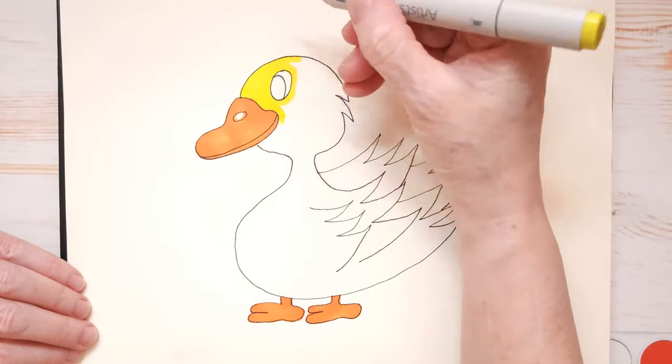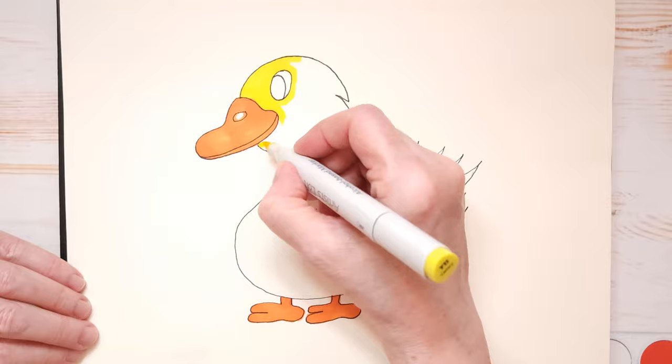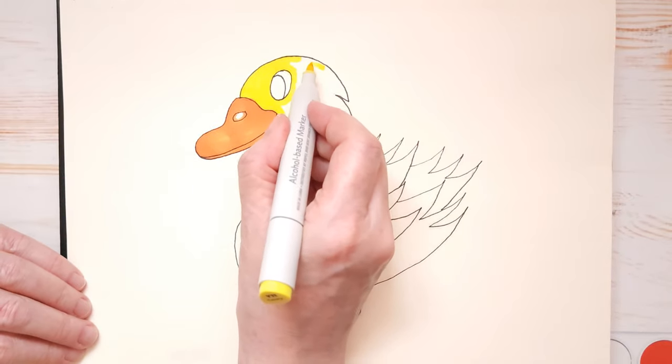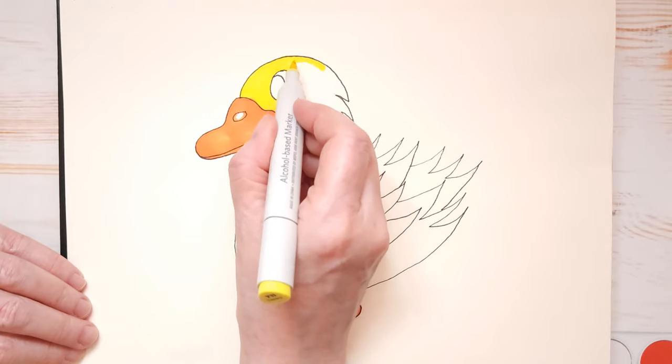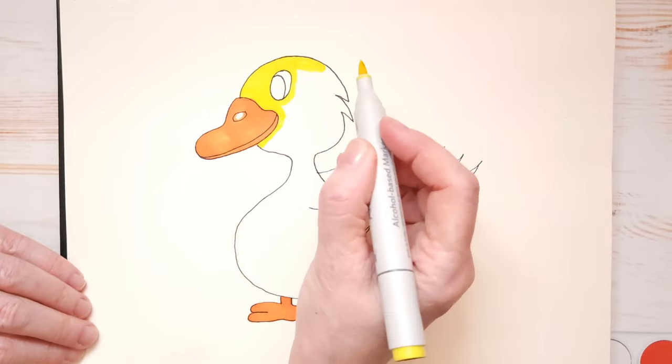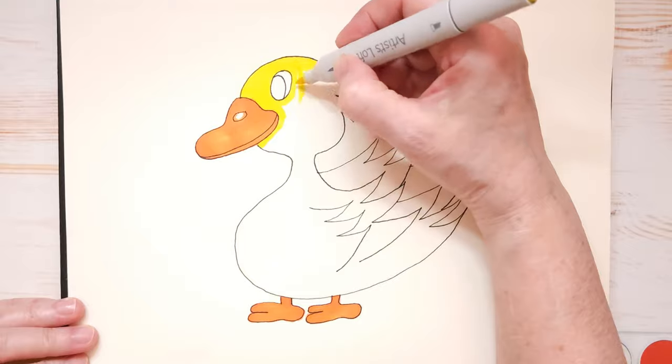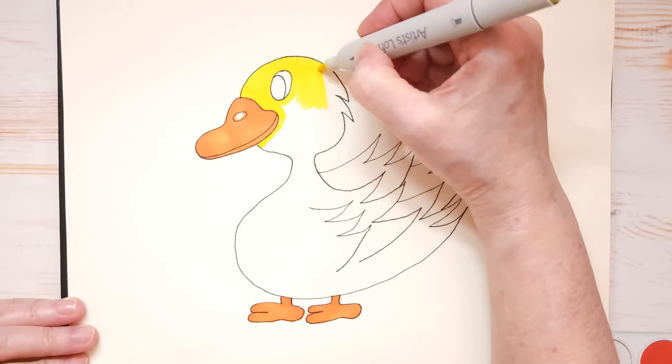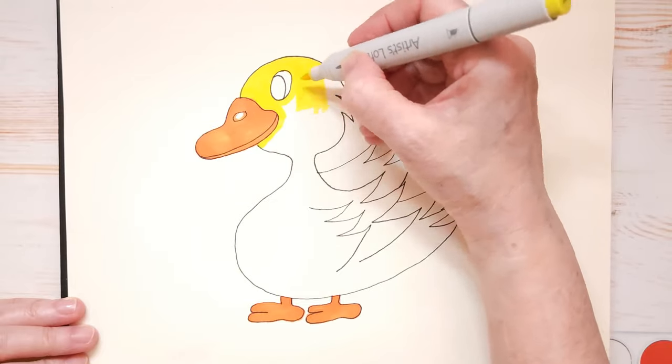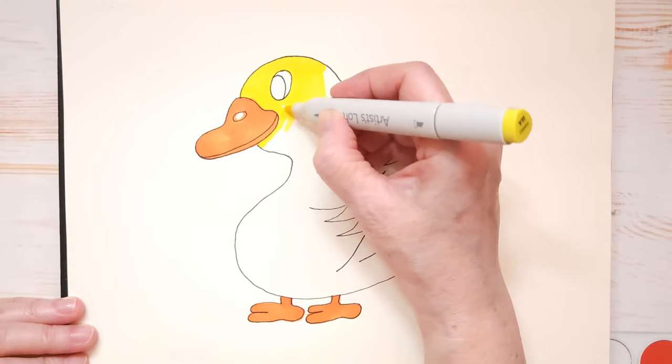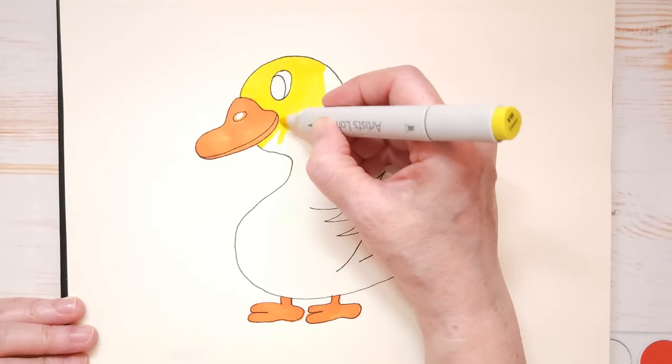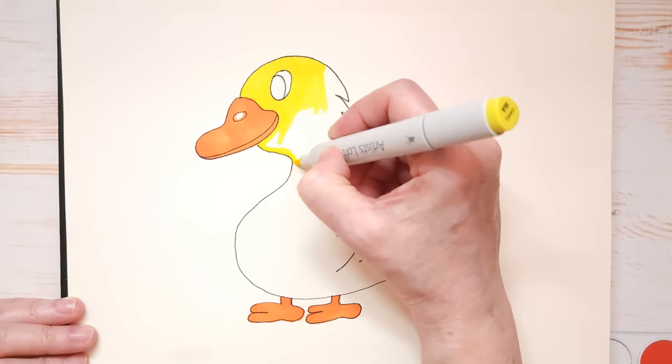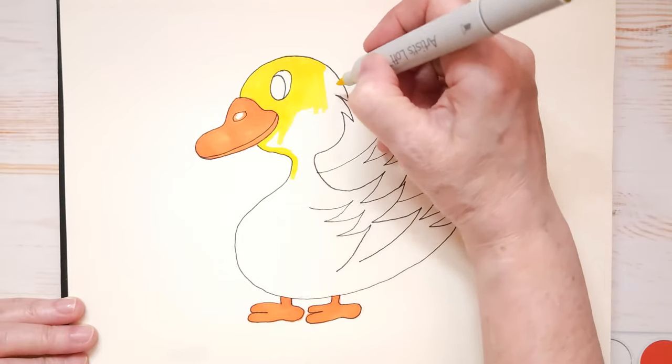But yes, my markers do bleed through the page. That's what you call it. It bleeds through. So if I want to save the page underneath, I always make sure that I put a practice page underneath or a scrap paper. And this is the perfect time to be drawing a baby goose because here in Canada it's nearly springtime. Actually, I think we're having an early spring at least where I live.